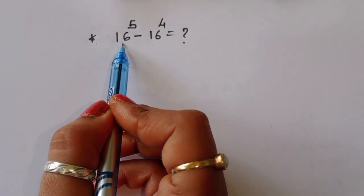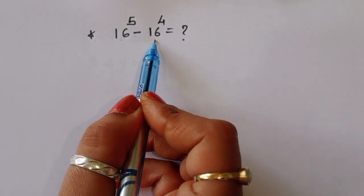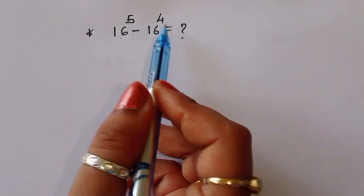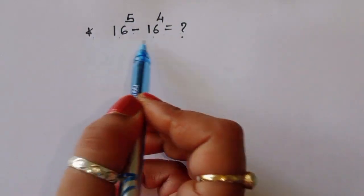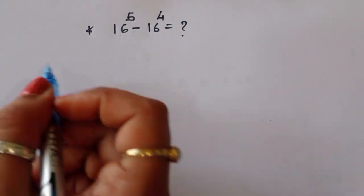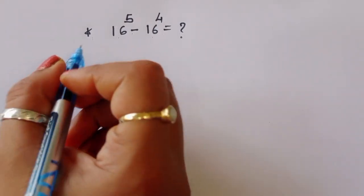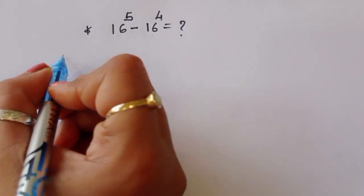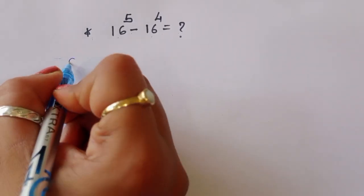The question is: 16 power 5 minus 16 power 4 is equal to what? We have to find out the value of this term. Let's see the solution.